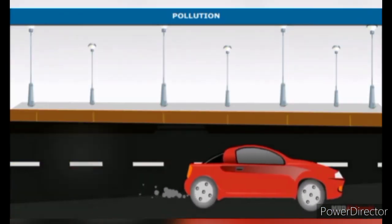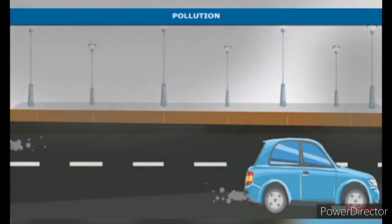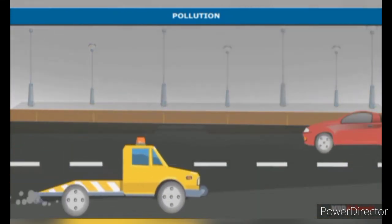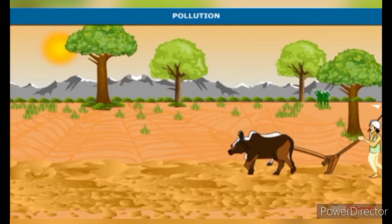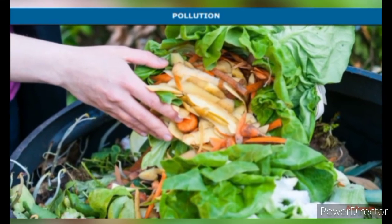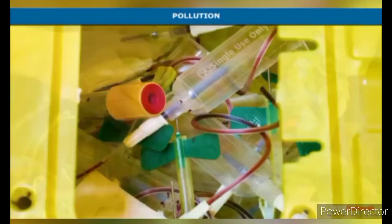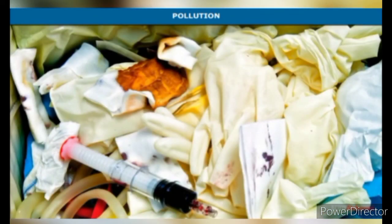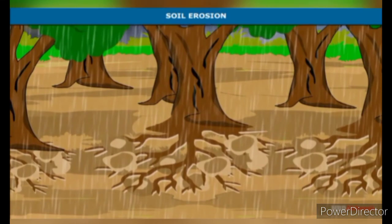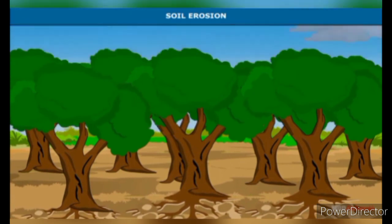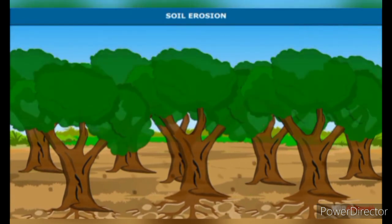Many activities of human beings are spoiling the surroundings. These include a large number of transport vehicles, factories, use of chemical fertilizers and pesticides in agriculture, and generation of huge quantities of waste in kitchens, laboratories, factories, offices, hospitals, etc. Apart from the flow of wastes into the surroundings, the increasing demand for food puts a heavy pressure on agriculture, which thus affects the quality of soil.